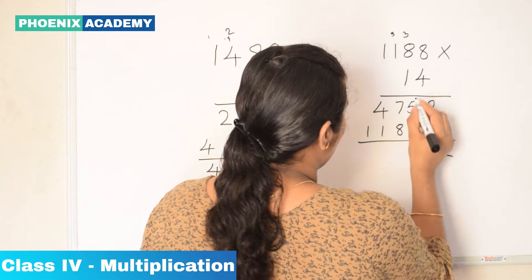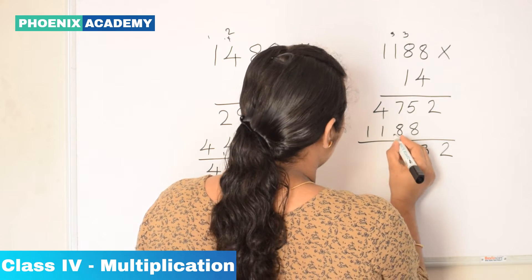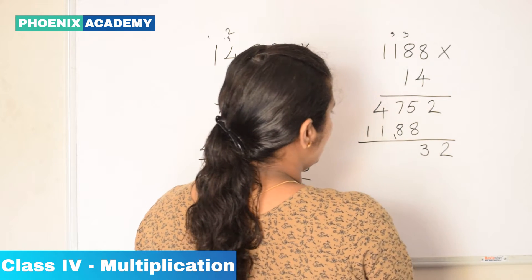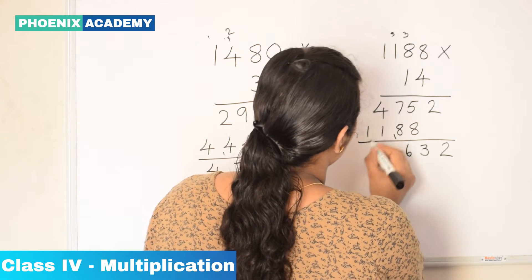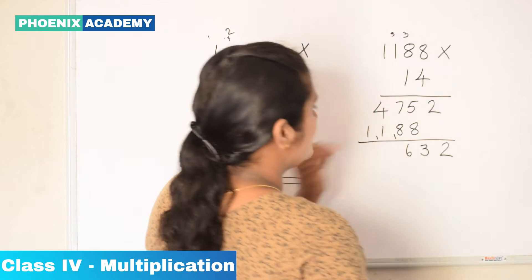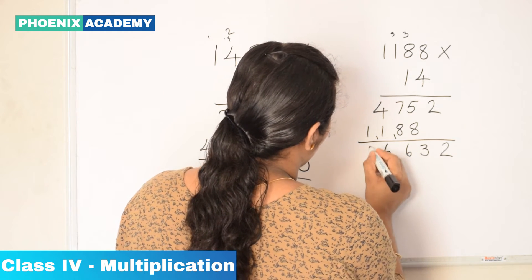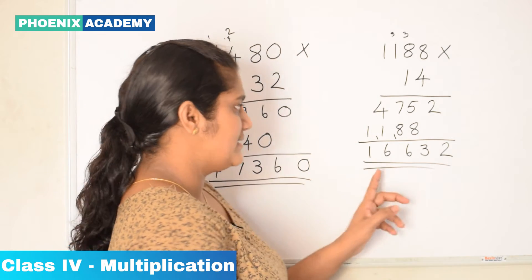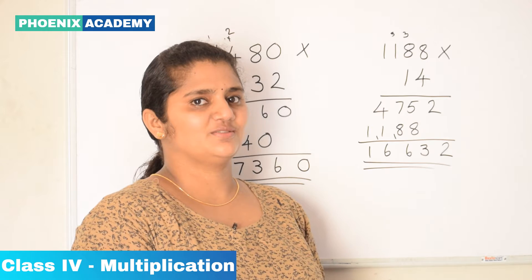2, then 8 plus 5 is 13. 1 carry forwarded. 8 plus 7 is 15, plus 1 is 16. 1 carry forwarded. 4 plus 1 is 5. So the answer is 16,632.